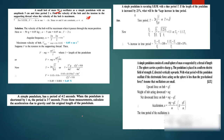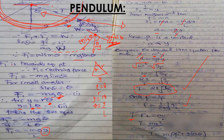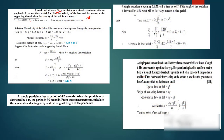Let us solve our examples and solidify the concept. We are having a small bulb of mass 50 grams, oscillating as a simple pendulum with an amplitude of 5 cm and a time period of 2 seconds. Find the velocity of the bulb and the tension of the supporting thread when the velocity of the bulb is maximum.